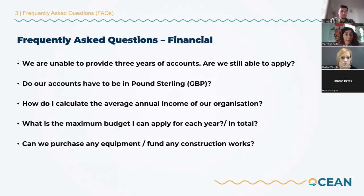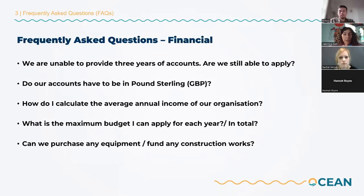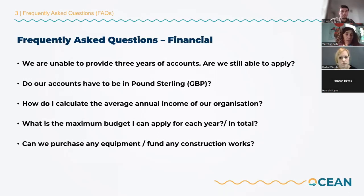In terms of calculating the average annual income, that's the average of the past three years based on the financial accounts of the lead organisation. You can apply for up to three million pounds, and the annual value must not exceed 50% of the lead organisation's average annual income. For purchasing equipment or funding construction works, capital costs should not be more than 10% of the total project value. Please review the section on capital costs in our finance guidance.